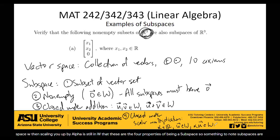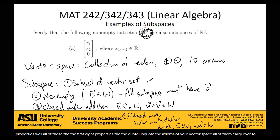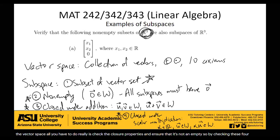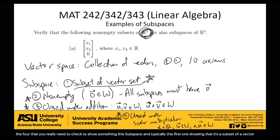You might ask yourself, why don't we have to check all 10 of those properties? Well, the first eight axioms of your vector space all carry over to your subspace — just in the fact that you are a subset that uses the same operations, those first eight axioms automatically hold. So to check that it's a vector space, all you have to do really is check the closure properties and ensure that it's not empty. So really, these bottom three are the big ones to check every single time.